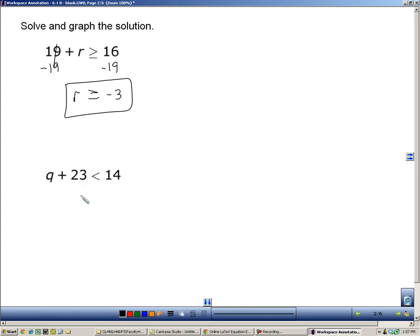Next example: q plus 23, which means I'll subtract 23 from both sides, so we end up with q is less than 14 minus 23, which is negative 9. So q is less than negative 9.